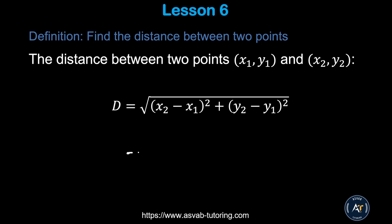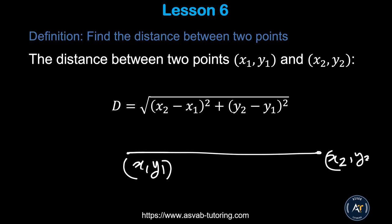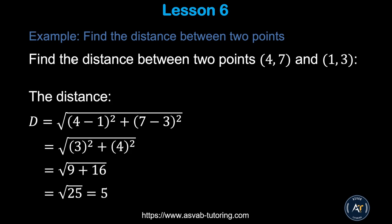Now we'll learn how to find the distance between two points (x1, y1) and (x2, y2). The distance formula is: d = √[(x2 − x1)² + (y2 − y1)²]. Applying this to the points (2, 4, 7) and (1, 3): (4 − 1)² + (7 − 3)² = 3² + 4² = 9 + 16 = 25. So d = √25 = 5.